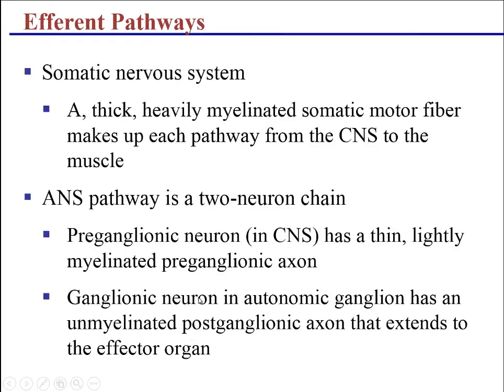In the somatic nervous system, the pathway is a heavily myelinated motor neuron that goes directly from the central nervous system to a skeletal muscle. But in the autonomic nervous system, we have two neurons in the chain. The preganglionic neuron is lightly myelinated, whereas the postganglionic neuron is completely unmyelinated.